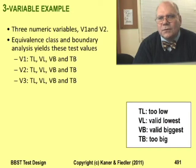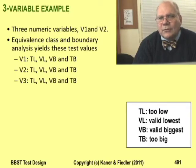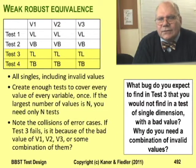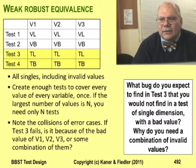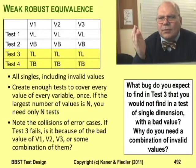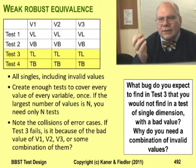Let me illustrate these distinctions with a three variable example. Variables V1, V2, and V3 each have the usual four boundary values. It would take four tests to achieve weak robust equivalence — you need four tests because you're testing four values of each variable, one value per test. Two of these tests are focused on error handling. They set invalid values for every variable, but the program is probably going to reject these tests on the first invalid value that it hits, ignore the others, and so this test is less informative than it looks.